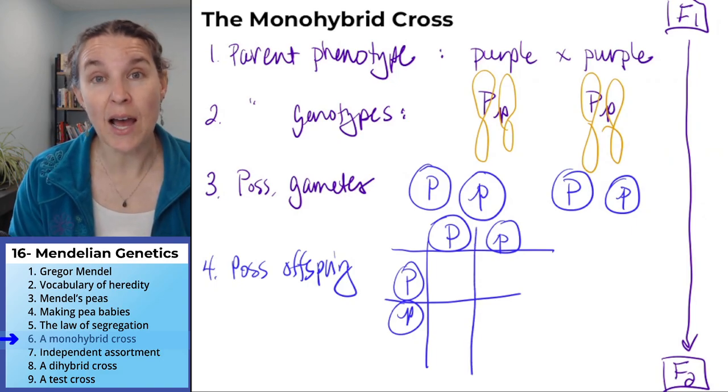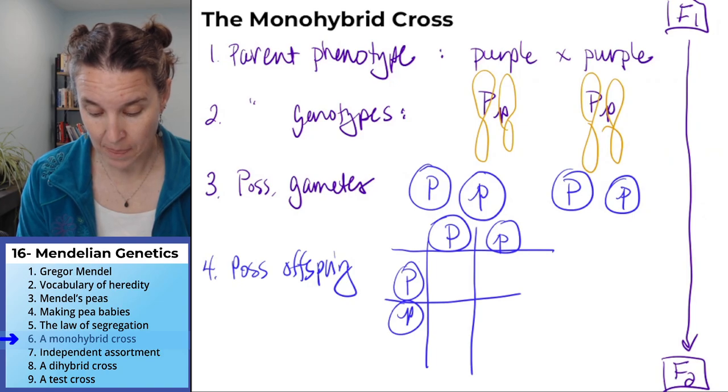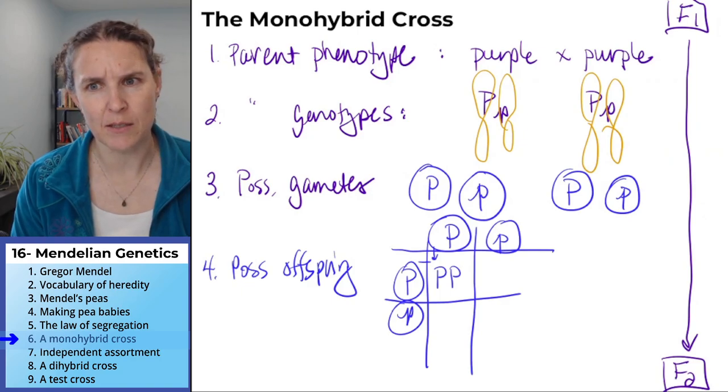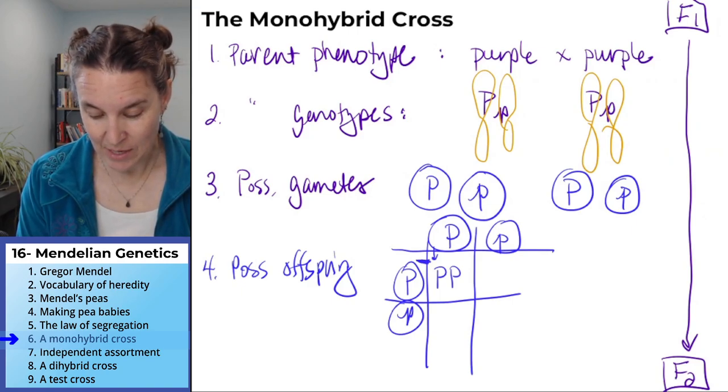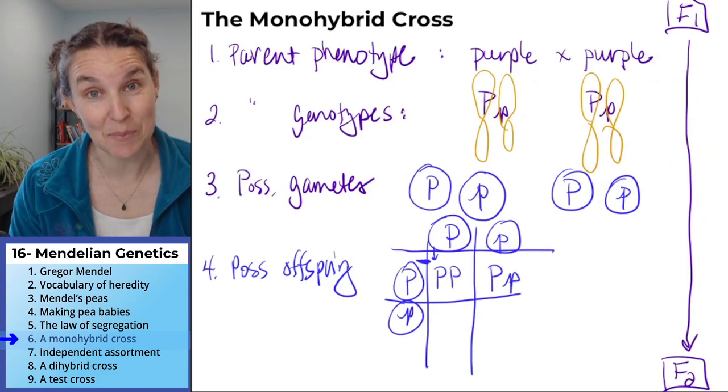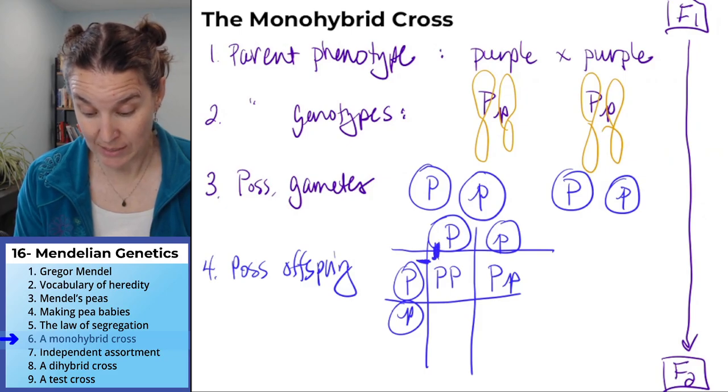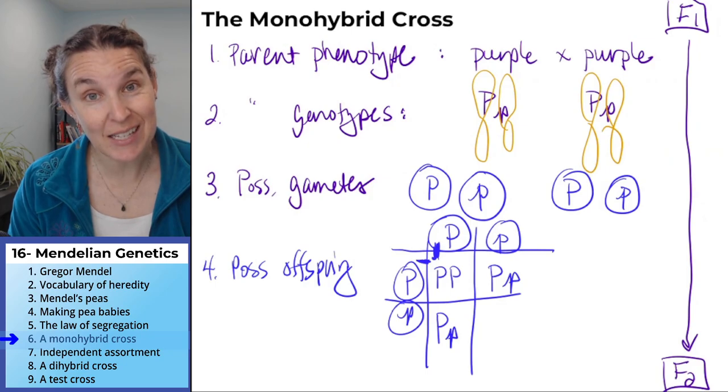And now, we just do the math. If this big P combines with this big P, then we get two big P babies. If this big P combines with the little p, then we get a heterozygous baby. If this big P combines with this little p, then we get another heterozygous baby.